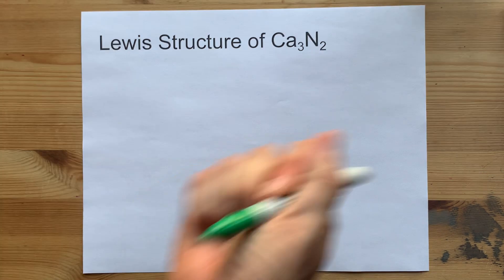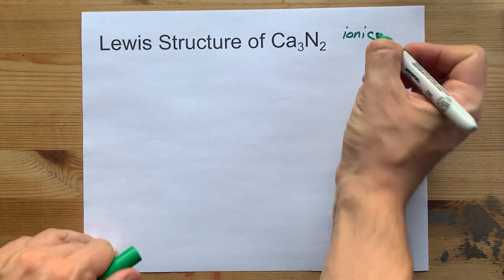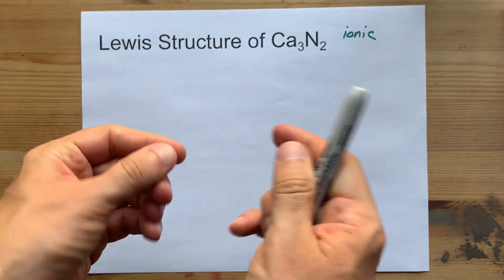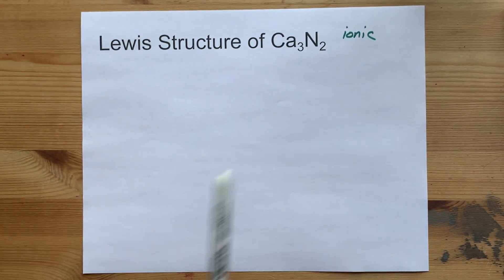Metals and non-metals combine to form ionic compounds, which means there's a transfer of electrons from the metal to the non-metal.